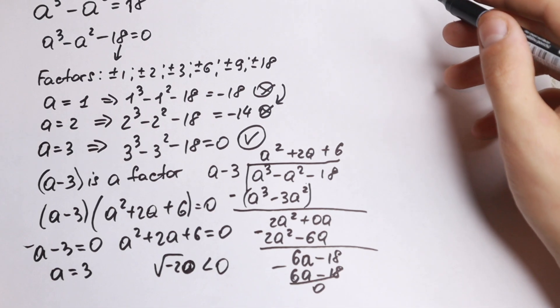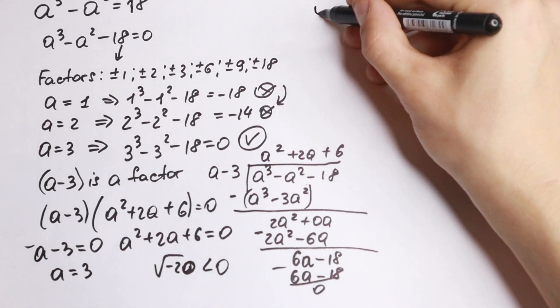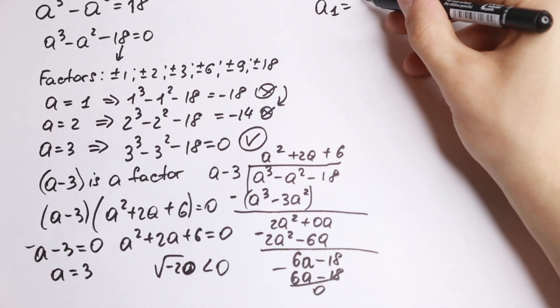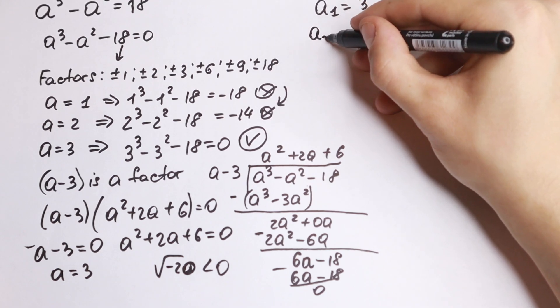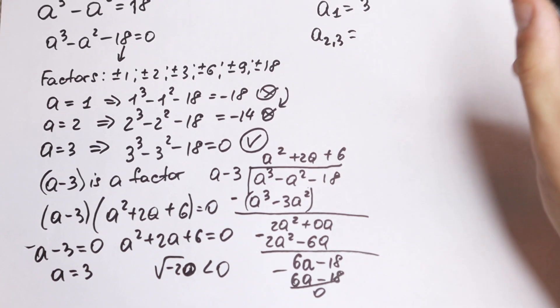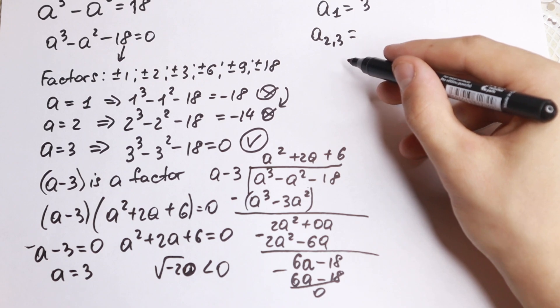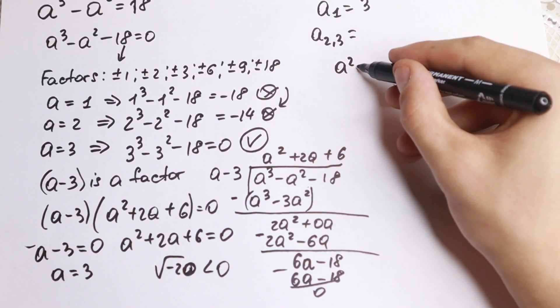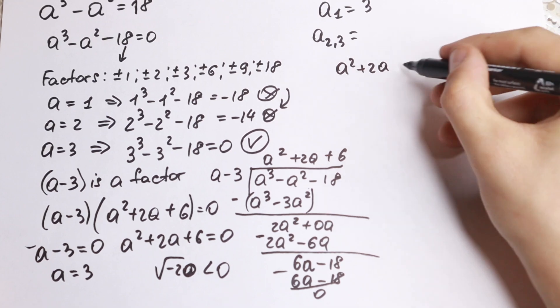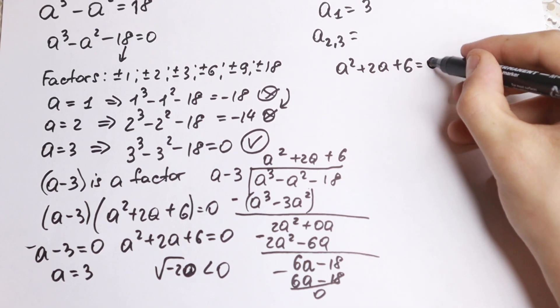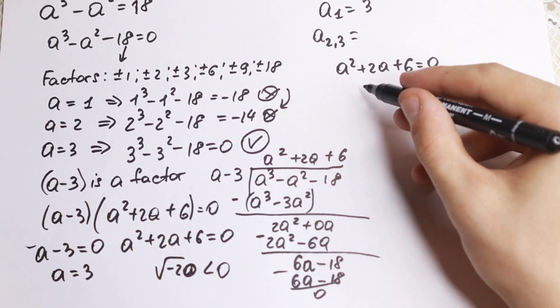Of course, in this video we will solve completely all questions. Right here we have that our a₁ = 3. a₂ and a₃ we find right now. And I want to show how we can solve this quadratic equation. We have a² + 2a + 6 = 0.